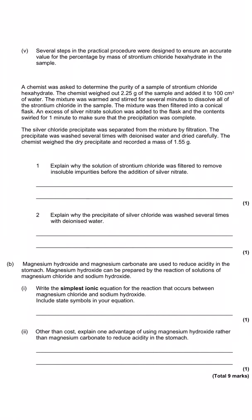And then the question goes on to say several steps in the practical procedure were designed to ensure an accurate value for the percentage by mass of strontium chloride hexahydrate in the sample. By accurate they mean close to the true value that it should be. The question says explain why the solution of strontium chloride was filtered to remove insoluble impurities before the addition of silver nitrate. Well, it's often good when you've been asked to explain why something is the case to think what would happen if it wasn't the case. If we didn't do that, we would get an incorrect mass, or more specifically the mass would be too large, because it would include those insoluble impurities as well as the silver chloride precipitate that we want to get.